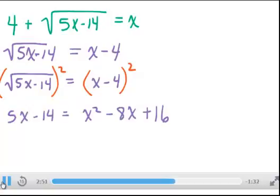Now we solve. Notice that on the right, we got a quadratic equation. Which means we want this equal to 0. So we can see if we can factor it or use some other method of solving quadratic equations. Subtract 5x, add 14, and we get this.